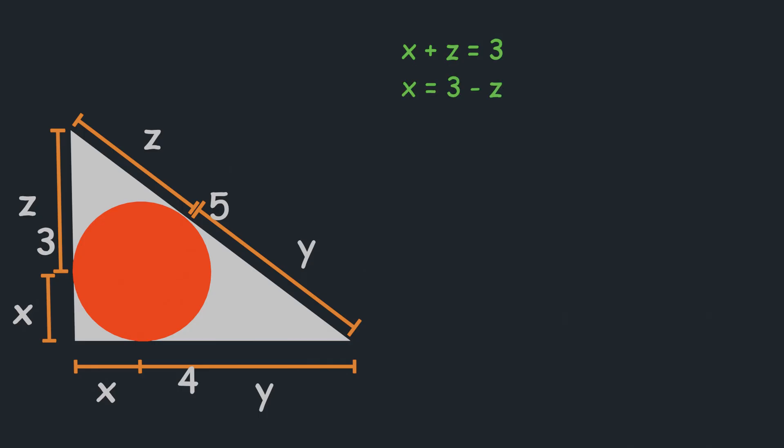Then, second, x plus y equals 4. If we put value of x, which we got previously in this equation, we will get 3 minus z plus y equals 4. Let's subtract 3 from both sides, and we will get y minus z equals 1, which can be written as y equals z plus 1.